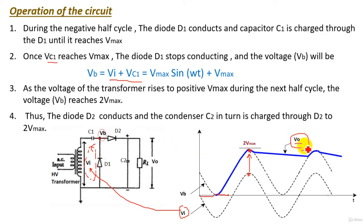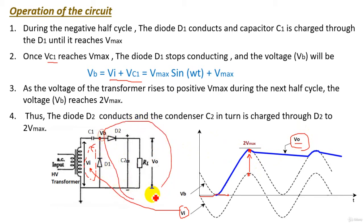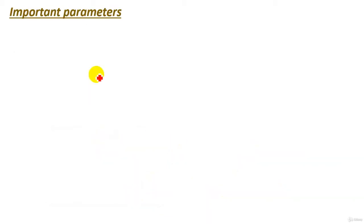For simplification, we can consider the voltage doubler circuit as a half wave rectifier circuit, where this part acts as a half wave rectifier but with input voltage V_B, which is doubled. So this circuit can be considered as a half wave rectifier with doubled voltage, and the output voltage is doubled as we see.